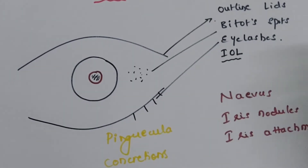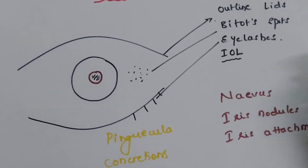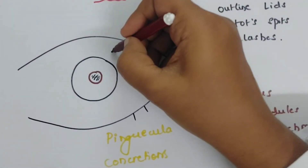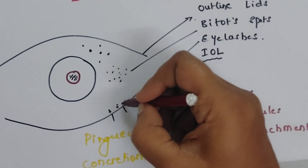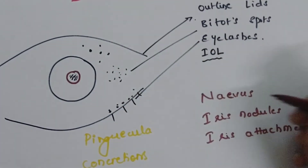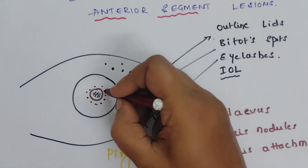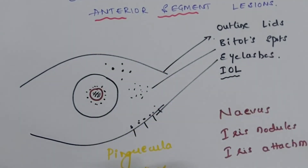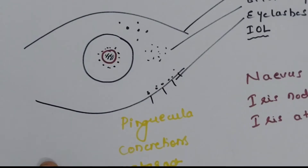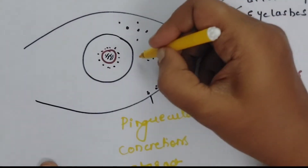Next, brown color is used to represent the nevus — the conjunctival nevus or nevus on the eyelids. Iris nodules can be represented with brown color, and even the iris attachment, that is the synechiae, can be shown with brown color. That is better shown with the slit examination.